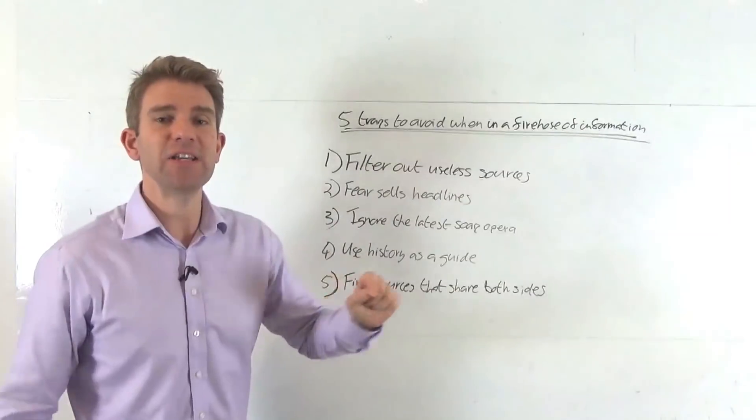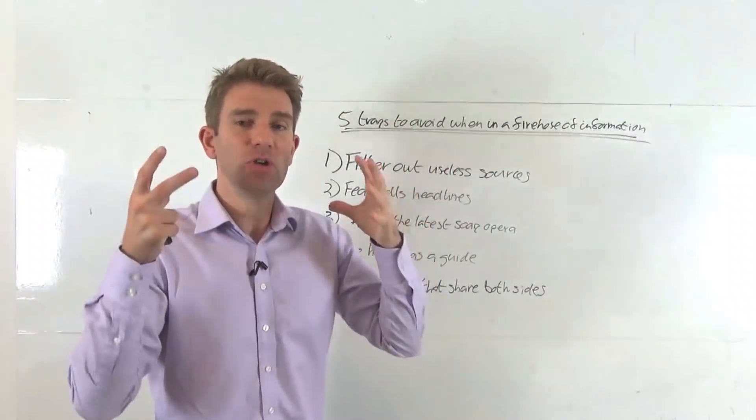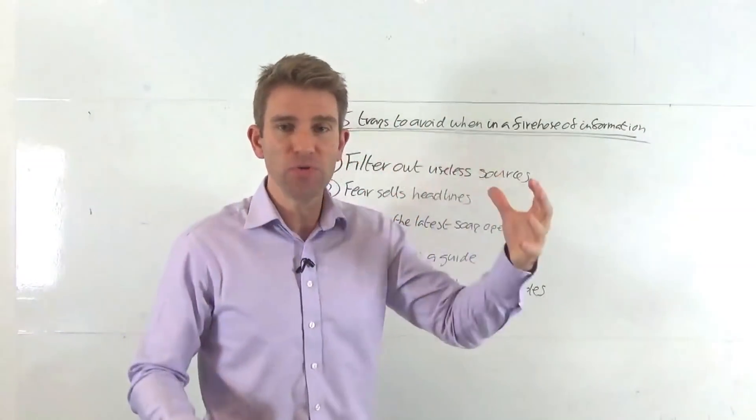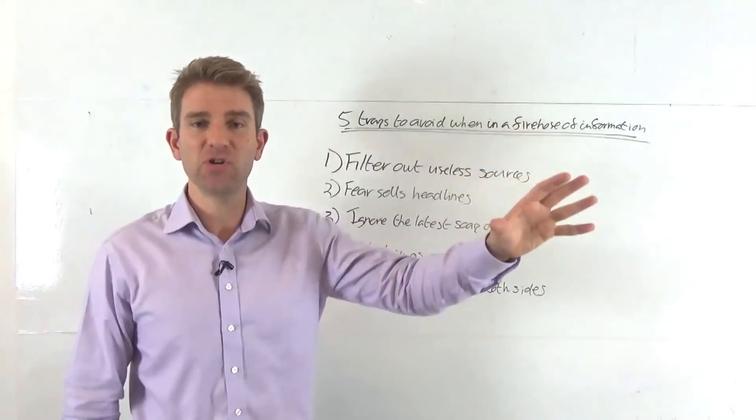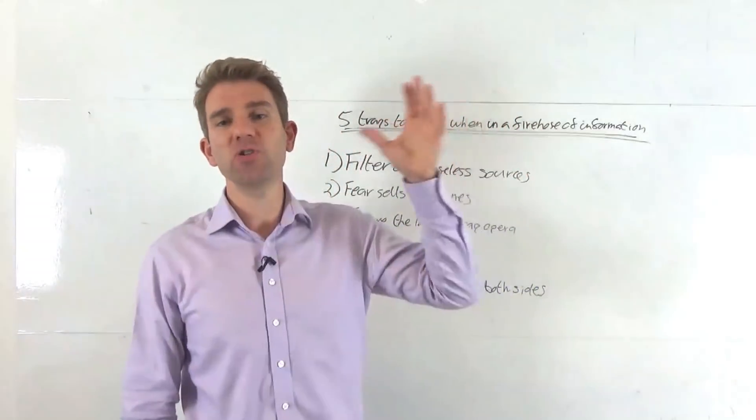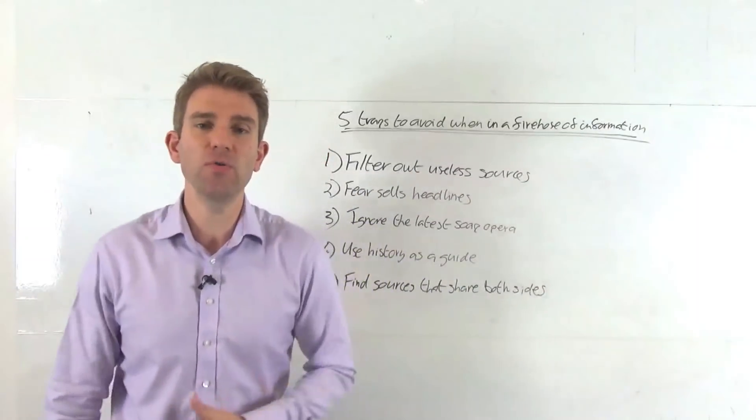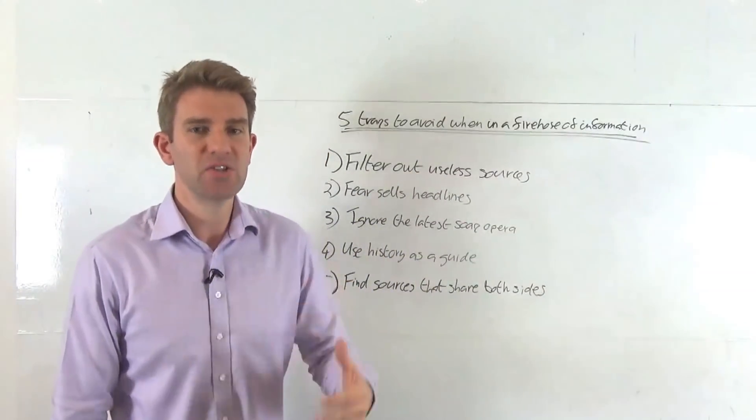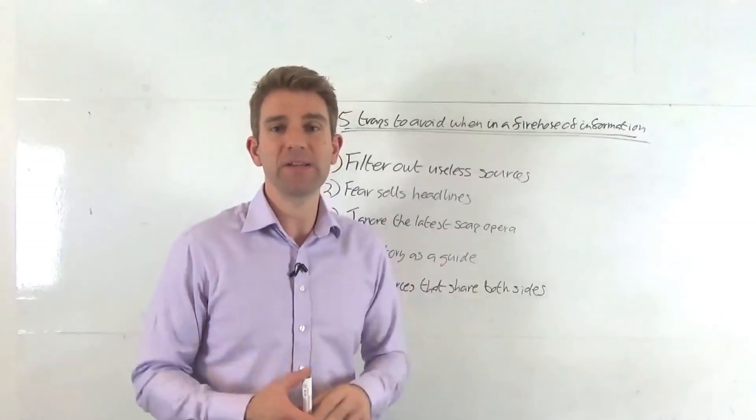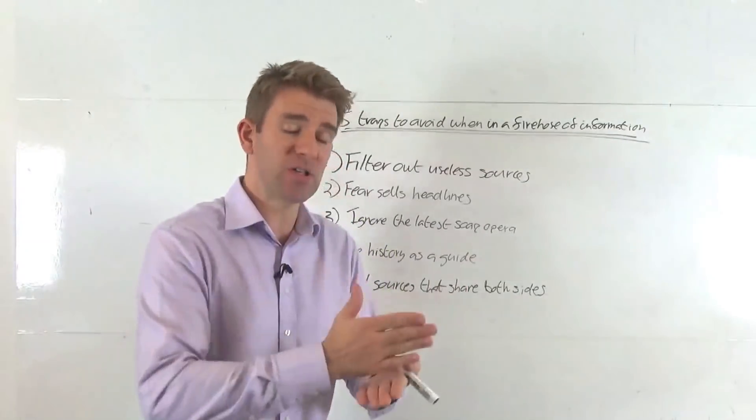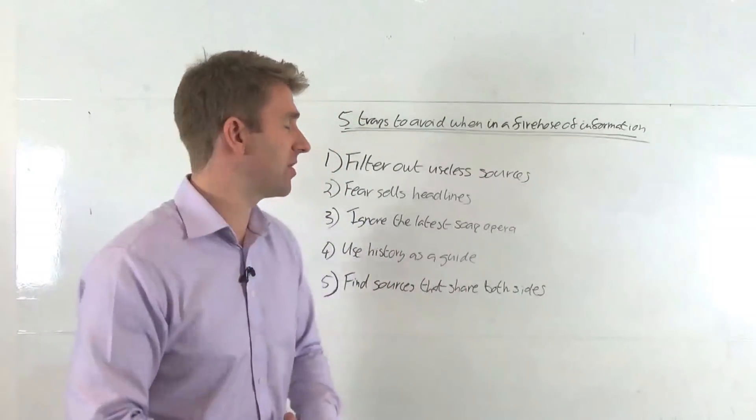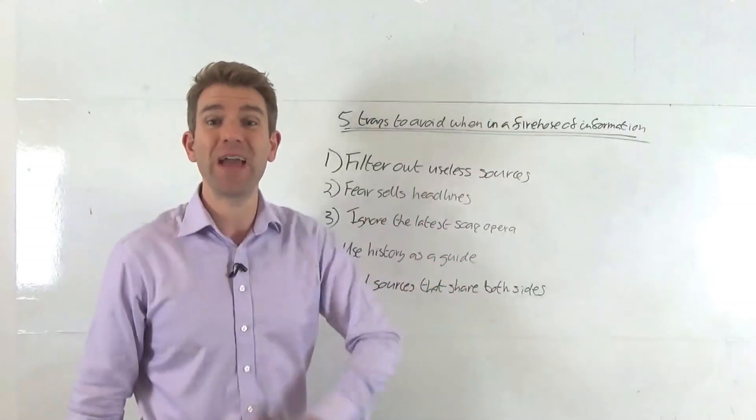First, filtering out useless sources. The trap you can get into is that you have every single source on, every single news feed, whether that's television, notifications, this or that. So filter out the ones that you know are useless, that are purely sensational. That's a good place to start. The trap to fall into is you have everything on because you don't want to miss something.